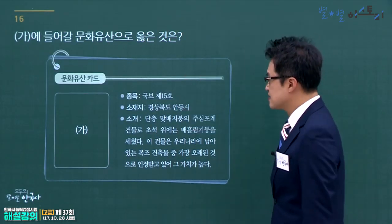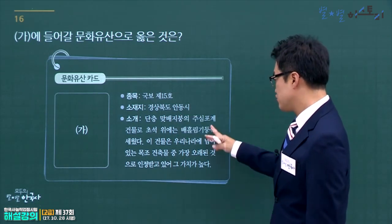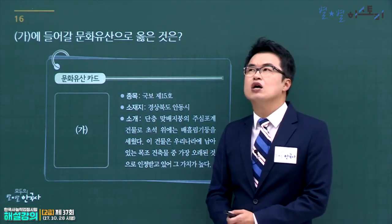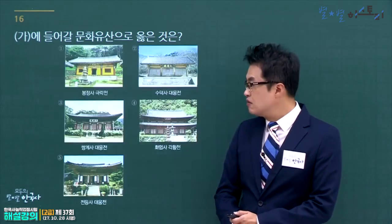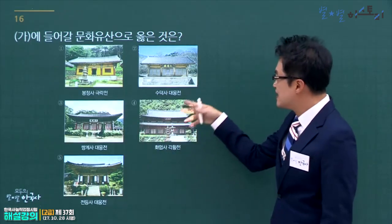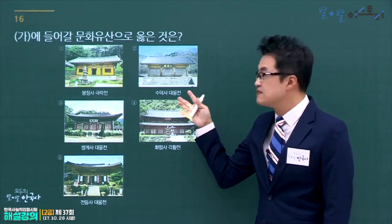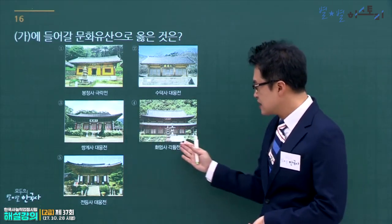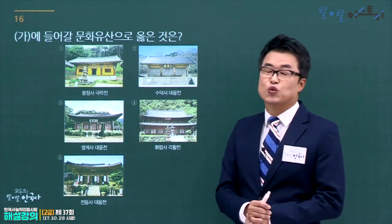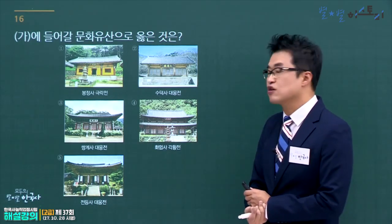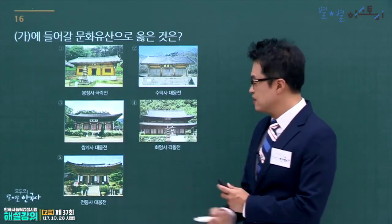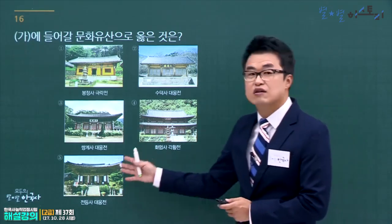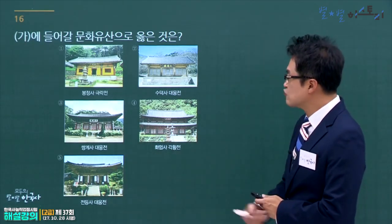안동에 있는 주심포 양식으로 우리나라에 남아있는 목조 건축물 중 가장 오래된 것은 봉정사 극락전입니다. 수덕사 대웅전도 고려 시대 건축물이지만 봉정사 극락전보다 이후 건물입니다. 쌍계사 대웅전(논산), 화엄사 각황전(전남 구례), 전등사 대웅전(강화도)은 모두 조선 시기 건물입니다. 정답은 1번, 봉정사 극락전입니다.